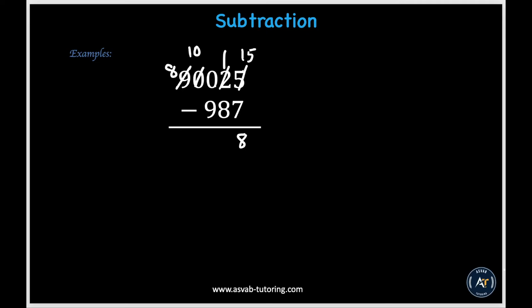Now we have to make this zero in the hundreds place a bigger number. So we need to borrow another 10, and we'll borrow that from the thousands place. So this 10 becomes a 9 and this zero then becomes a 10. Now we can finally make this 1 in the tens place a bigger number. We'll borrow a 1 from the hundreds place, so this 10 in the hundreds place will become a 9, and then this 1 will become a 10. So 10 minus 8 in the tens place gives us 2.